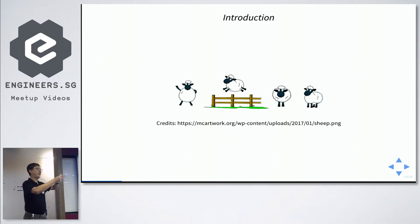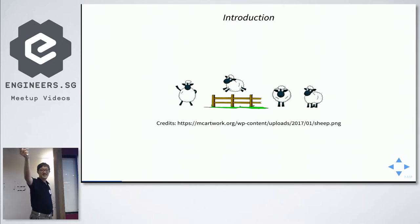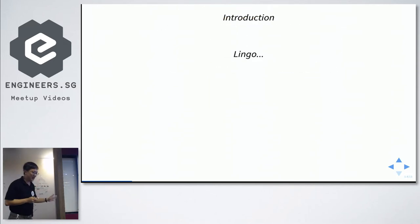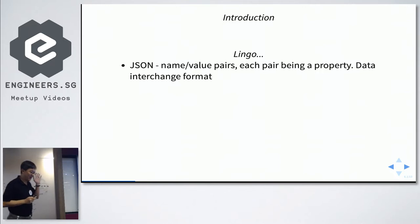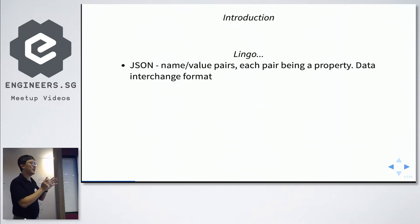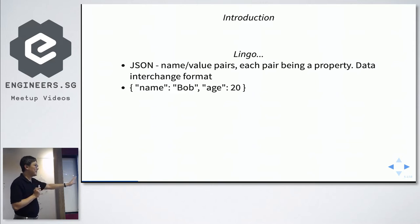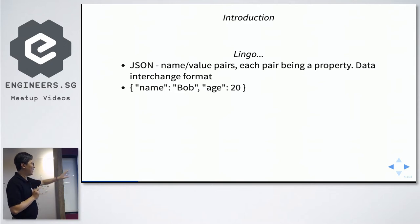How many of you have done Java, C#, Swift, or TypeScript? JSON — JavaScript Object Notation — consists of name-value pairs; each pair is a property. It's a data interchange format. For example, a JSON response might have two properties: a name property with value 'John' and an age property with value 20.